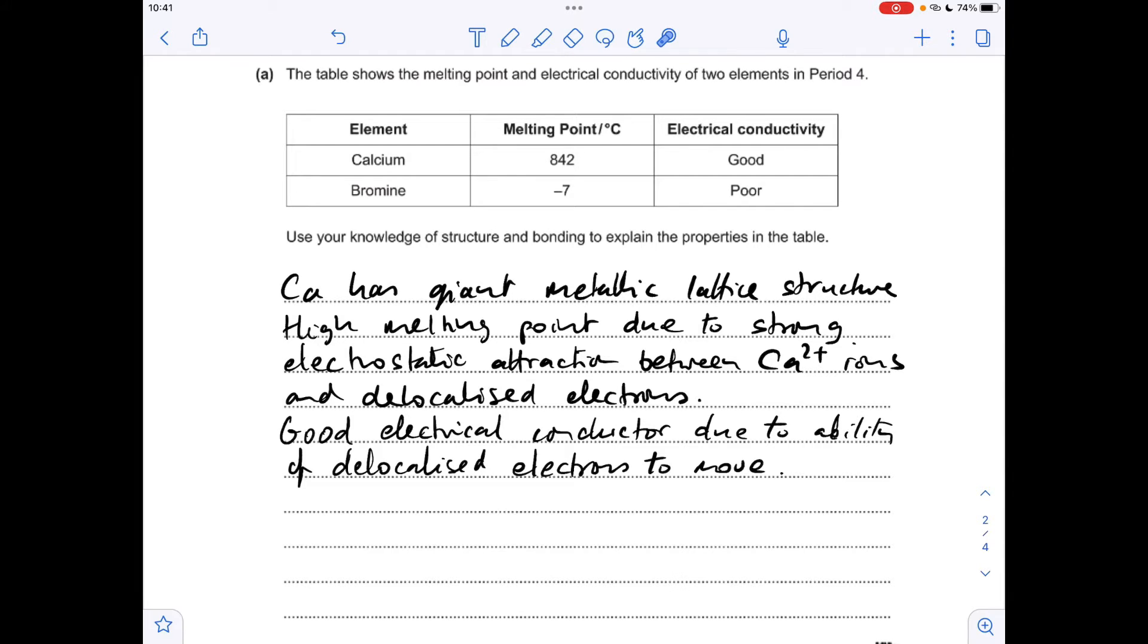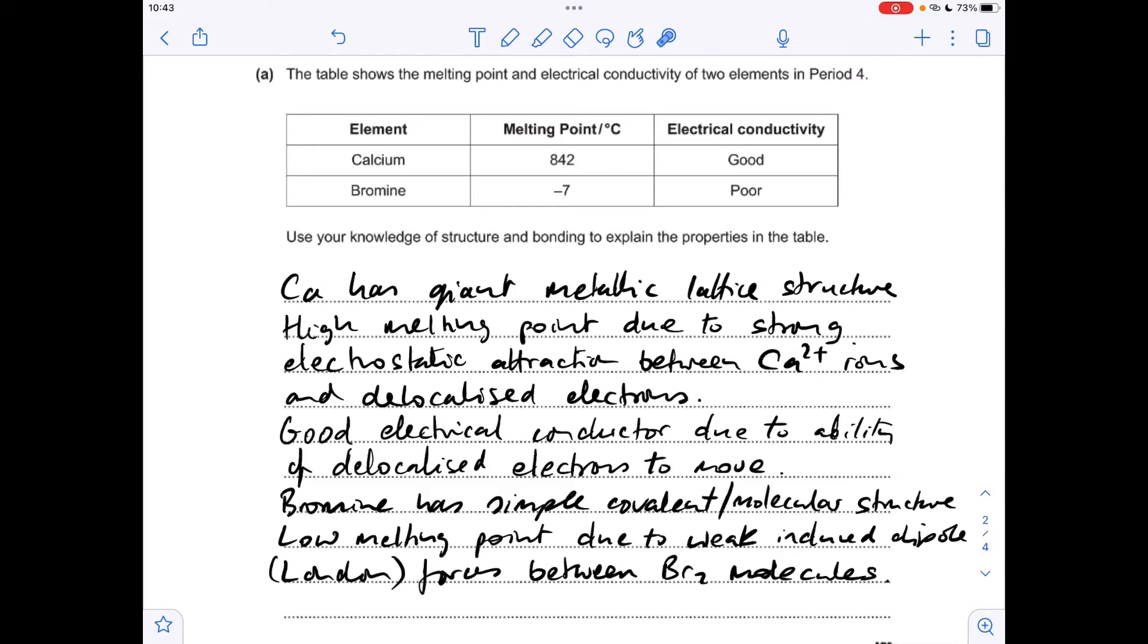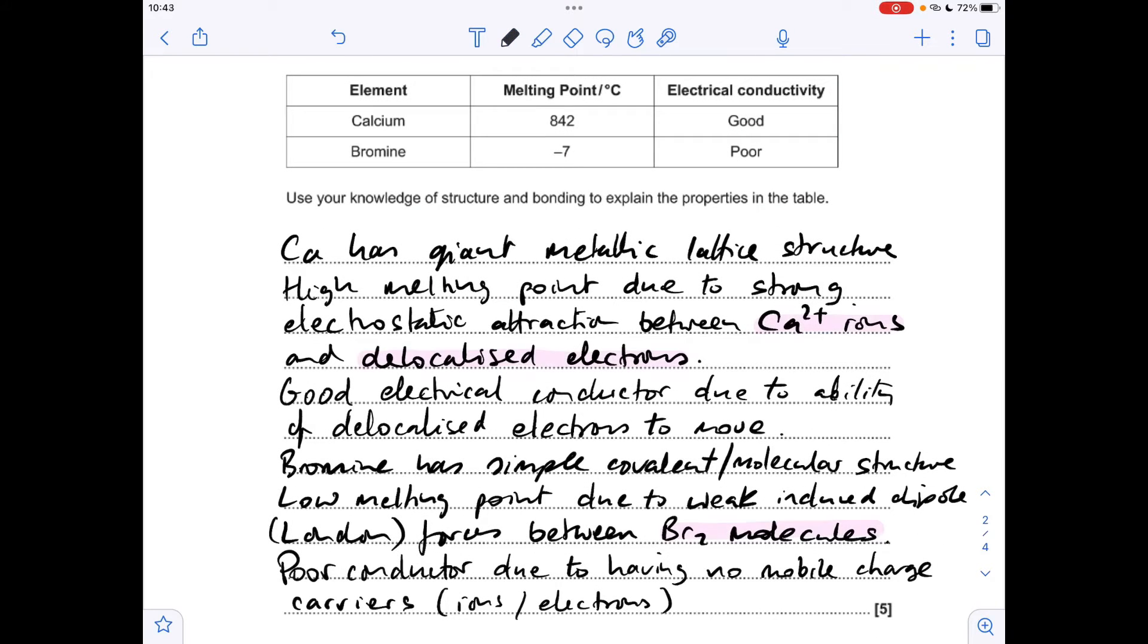Moving on to bromine now. You'll notice it's got a much much lower melting point than calcium. What's that down to? Well bromine has a simple covalent or a simple molecular structure and to melt the structure you've got to break the weak induced dipole forces between the Br2 molecules. And finally why is bromine a poor electrical conductor? It's because it doesn't have any mobile charge carriers - doesn't have any mobile ions, doesn't have any mobile electrons.